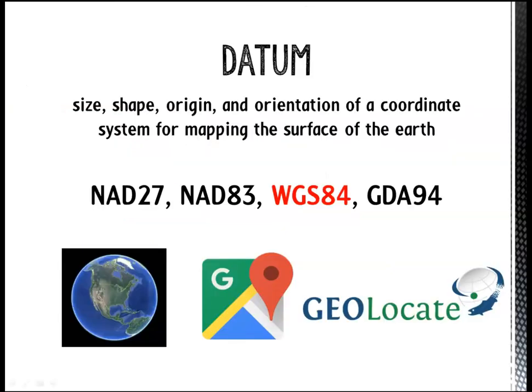For both decimal degrees and degrees, minutes, seconds, you might see some additional information that looks like one of these. This is called the geodetic datum, and it's the reference system that is used to map the surface of the Earth. The most common datum you'll probably find is WGS84. This is the datum currently used by Google Earth, Google Maps, and the georeferencing application we use, Geolocate.